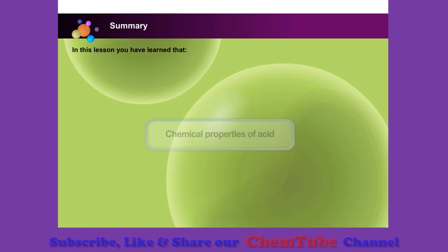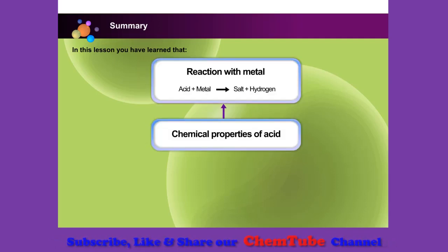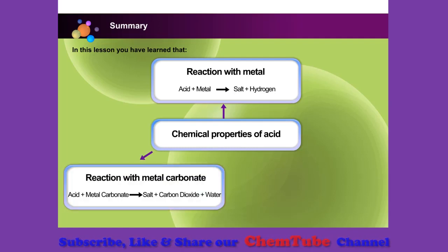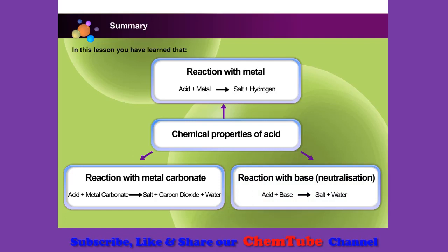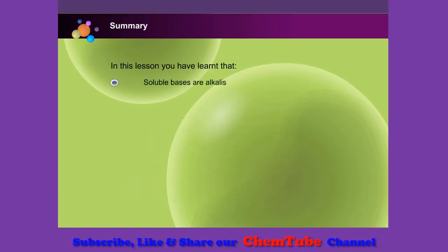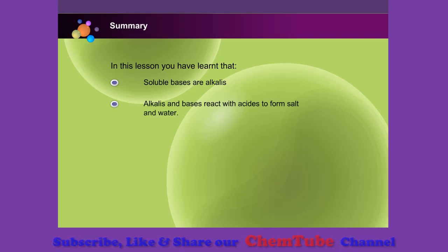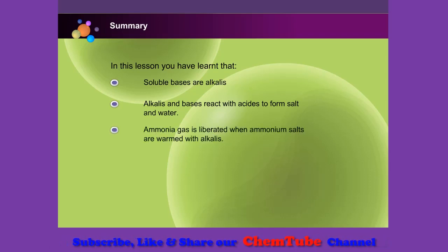In this lesson, you have learned that when an acid reacts with metal, salt and hydrogen gas are produced. The reaction between an acid and metal carbonate produces salt, carbon dioxide, and water. When an acid reacts with bases, salt and water are produced — this process is called neutralization. Soluble bases are alkalis, and alkalis and bases react with acids to form salt and water. Ammonia gas is liberated when ammonium salts are warmed with alkalis.